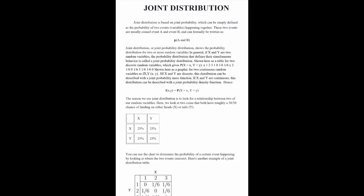Joint distribution is based on joint probability, which can be simply defined as a probability of two events happening together. These two events are usually coined event A and event B and can formally be written as P of A and B.